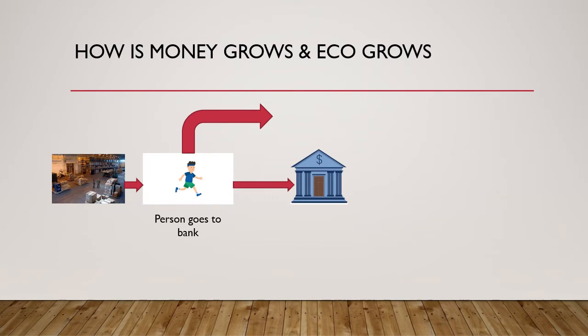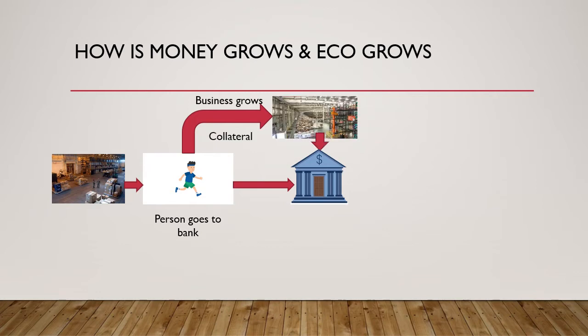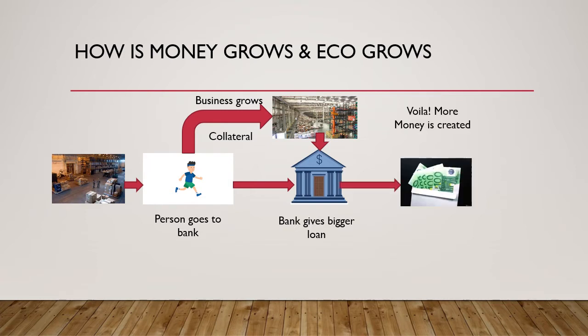Let's see how money grows in the system. The person who takes the loan from the bank invests it in his business, and his business luckily grows. Now the person sees future demand and approaches the bank for more loan. Since the business has already grown and the person has a bigger collateral to offer, the bank gives him a bigger loan — and voila, more money is created in the economy.